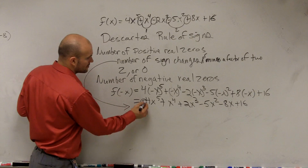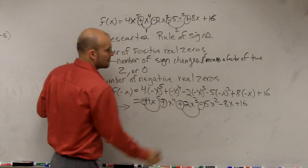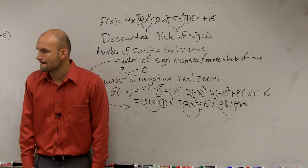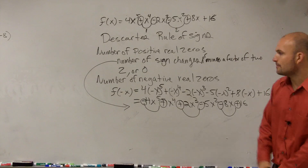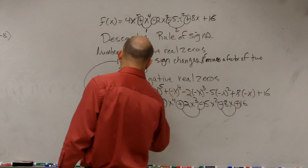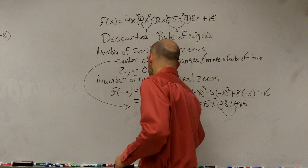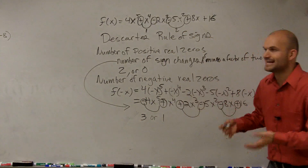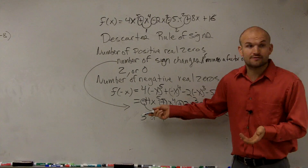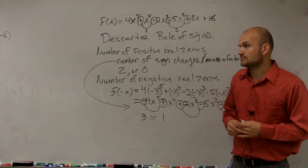So let's count how many sign changes we have in f of negative x. We have one, two, three sign changes. Therefore, the number of negative real zeros is going to be either three or one. Remember, you subtract a factor of two — three minus two is one. So you could have three negative real zeros, or you could have one negative real zero, but it's going to be one or the other.